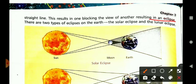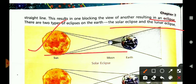There are two types of eclipse on the earth: the solar eclipse and the lunar eclipse. In figure one, you can see the sun, moon, and earth on a straight line.